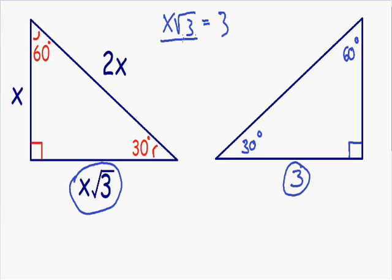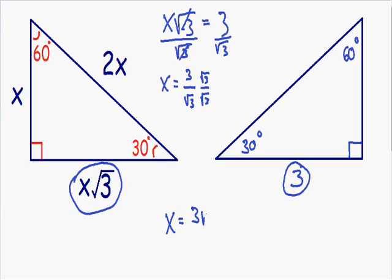Let's solve this equation for x. We can get rid of the square root of 3 by dividing both sides by the square root of 3. On the left-hand side, the square root of 3 cancels out, leaving only x. On the right-hand side, we have 3 divided by the square root of 3. Our final answer can never have a square root in the denominator, so I need to rationalize — I'm going to multiply the top and bottom by the square root of 3. We get 3 times the square root of 3 on top, and the square root of 3 times the square root of 3, which is just 3, on the bottom. The 3's cancel out, so x is equal to the square root of 3.